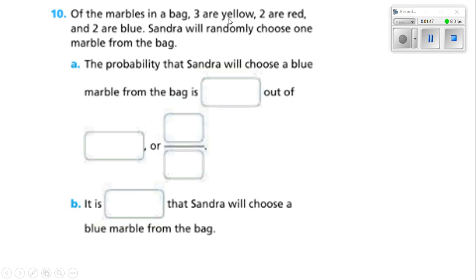Of the marbles in a bag, three are yellow, two are red, and two are blue. Sandra will randomly choose one marble from the bag. The probability that Sandra will choose a blue marble from the bag is what out of blank? Well, let's see. Of the marbles in the bag, three are yellow, two are red, and two are blue. That's a total of three plus two plus two. That's seven marbles. So if it's asking which one will be blue and there's only two blue, that's two out of seven. So the answer is two out of seven, or two over seven. It is unlikely that Sandra will choose a blue marble. Well, it's only two out of seven. I would say it's unlikely that she's going to get a blue marble. Not very good odds.